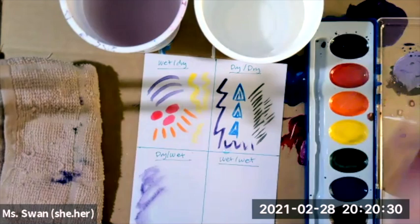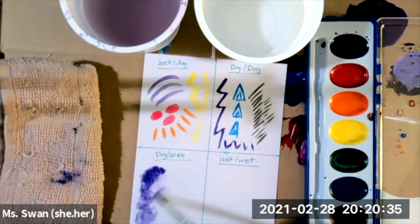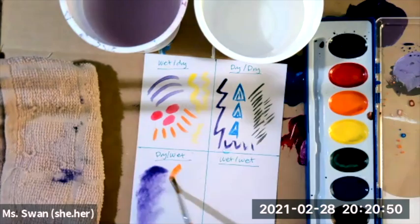Then go back over just to get a nice type of a wash so that it kind of starts to bleed into your different colors. This is really good for doing a lot of backgrounds.